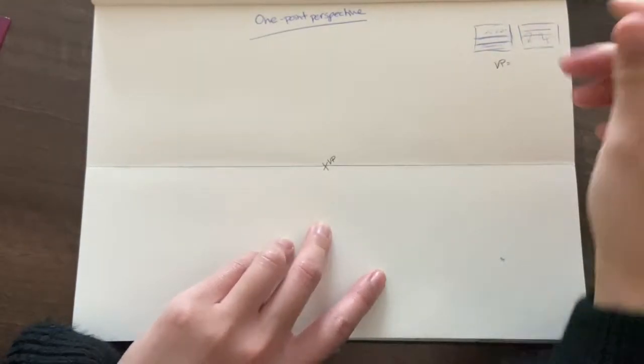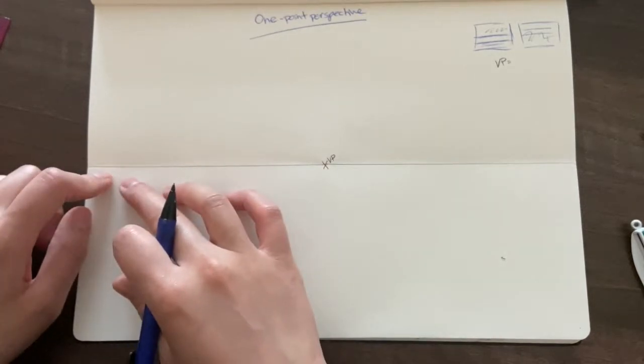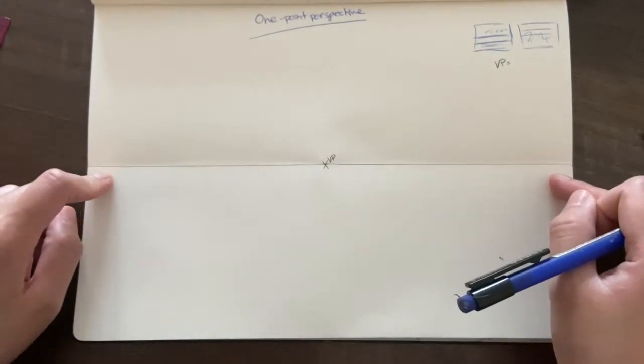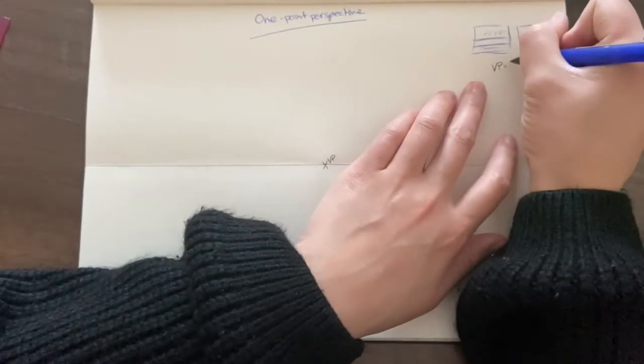Pause the video now to do those steps. So write down the title, draw the horizon line, and put an X mark and key it as vanishing point.